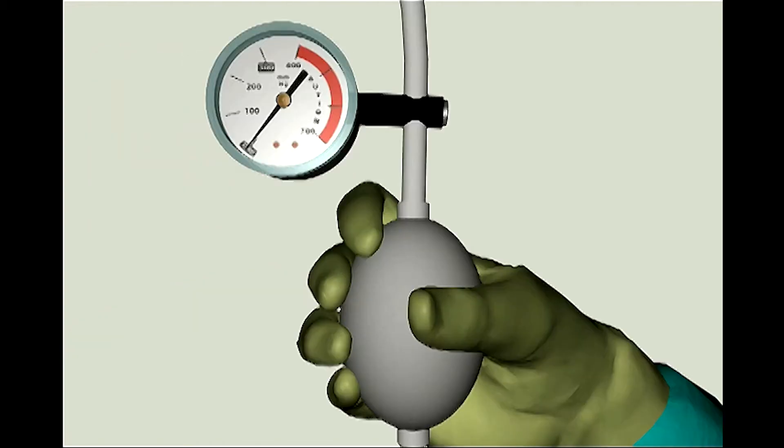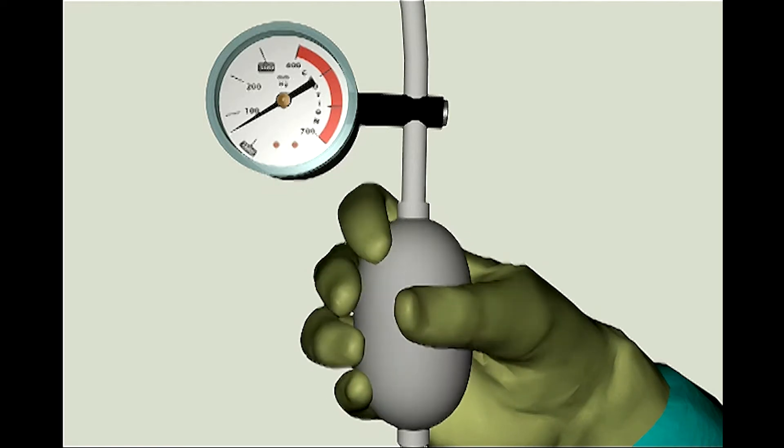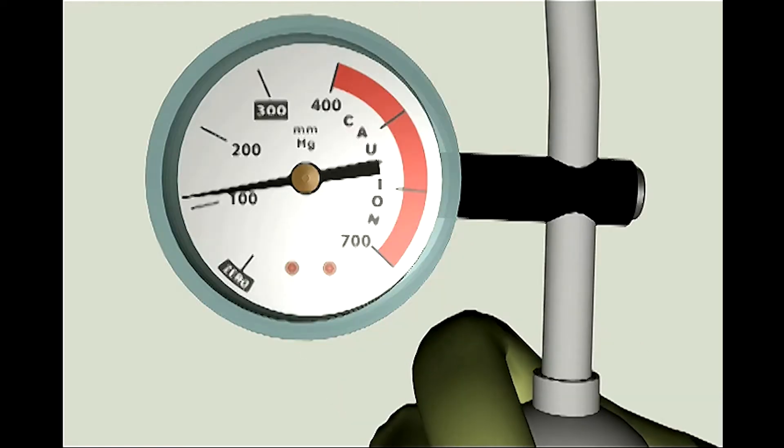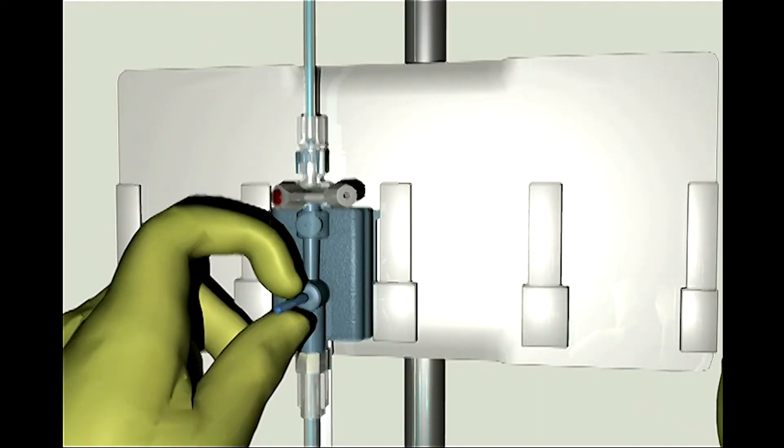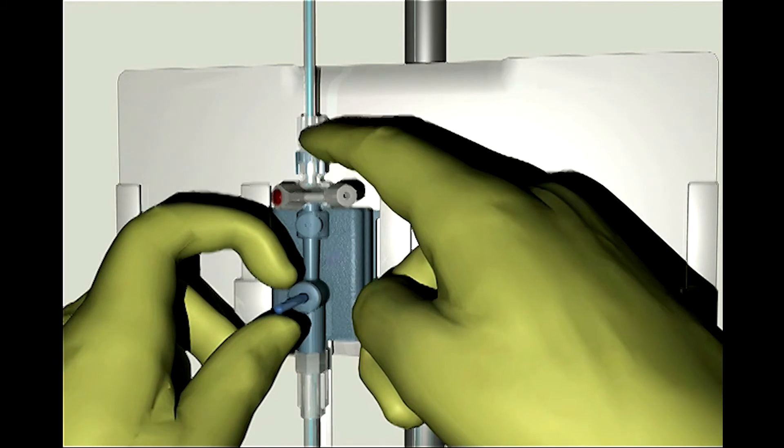Step 5: Fast flush the TruWave transducer system. Pressurize the IV flush solution bag to 300 mmHg. Pull the snap-tab to flush the system under pressure, while tapping on the tubing and stopcocks to remove any residual bubbles.